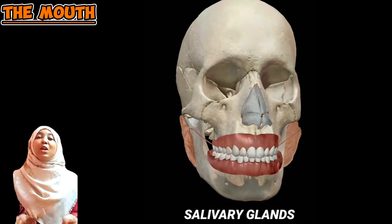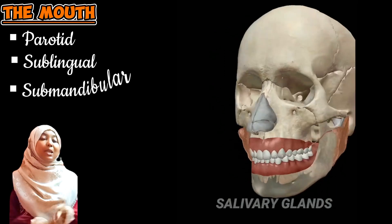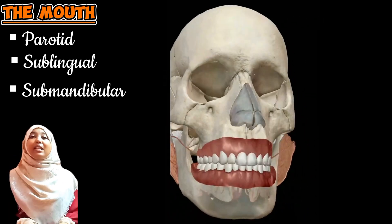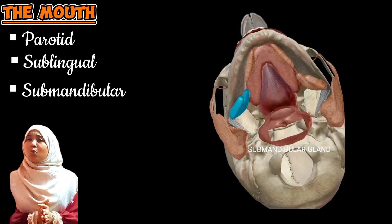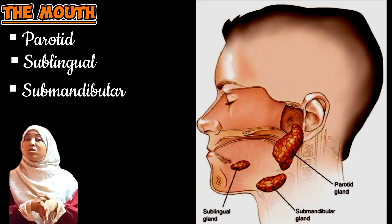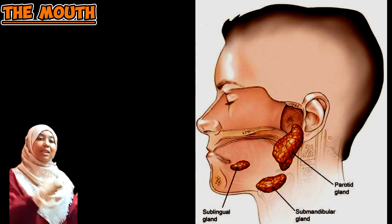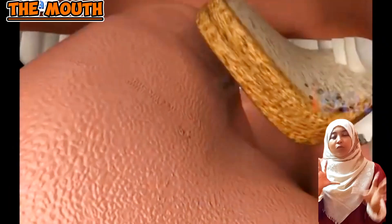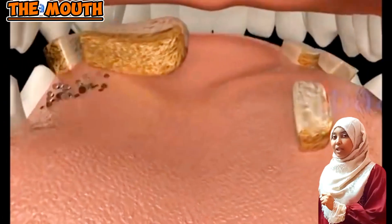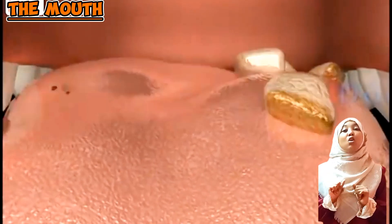We have three salivary glands in our mouth: the parotid, found beneath the cheeks; the sublingual, found beneath the tongue; and the submandibular, found along our jaws. All three secrete saliva. Saliva is a fluid whose main component is water, and it also contains mucus and an enzyme called salivary amylase, also known as ptyalin.